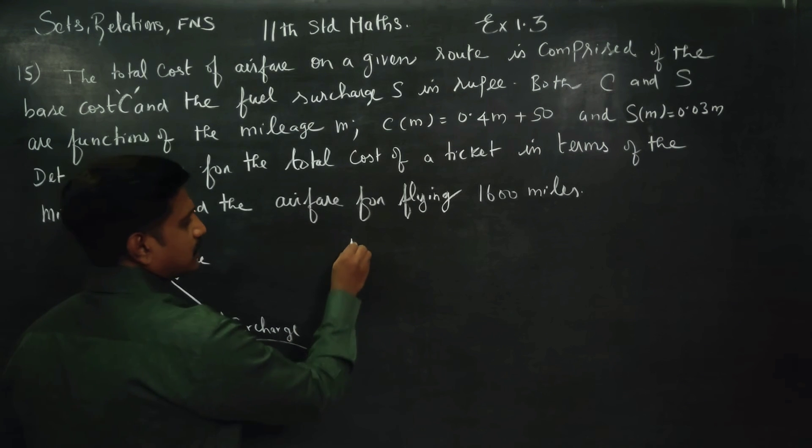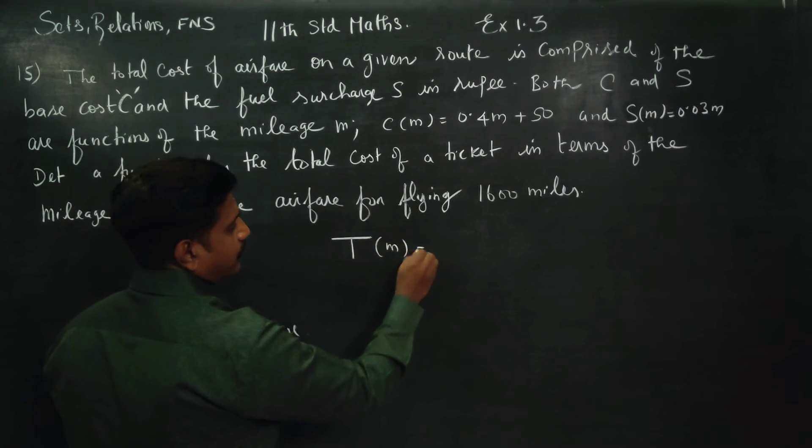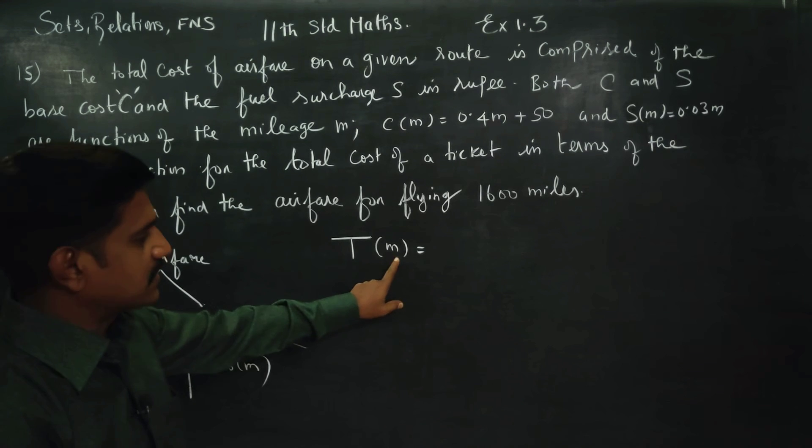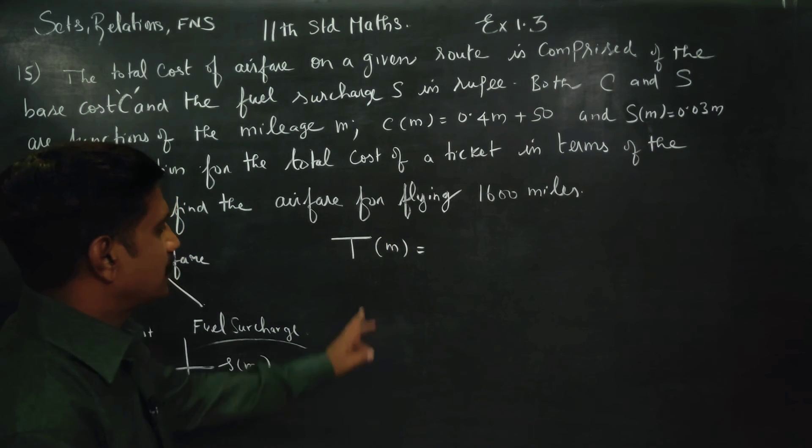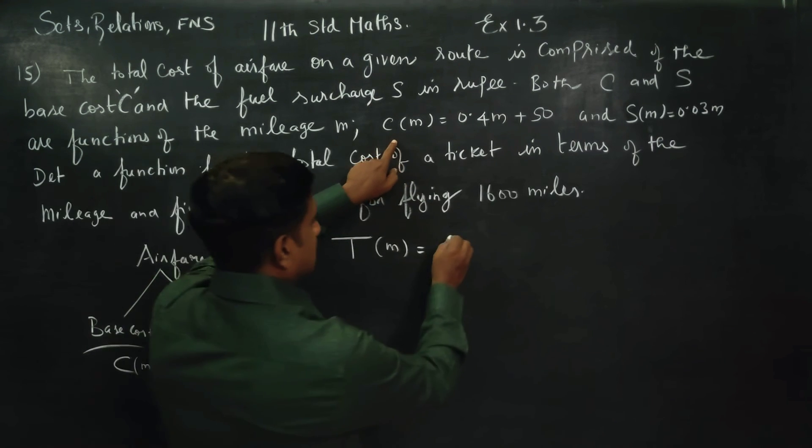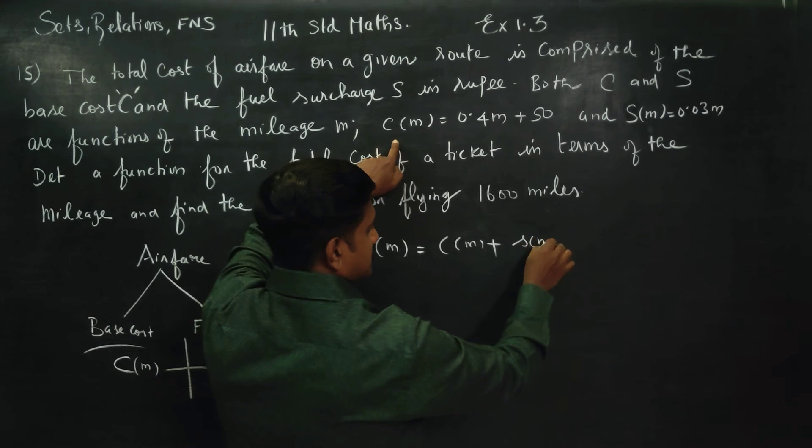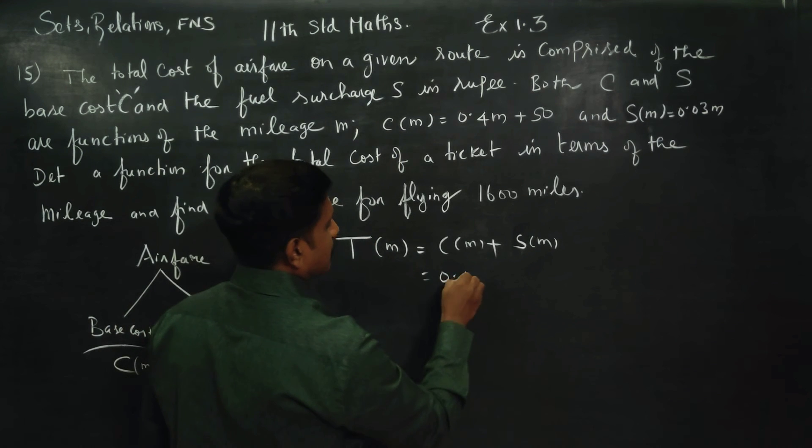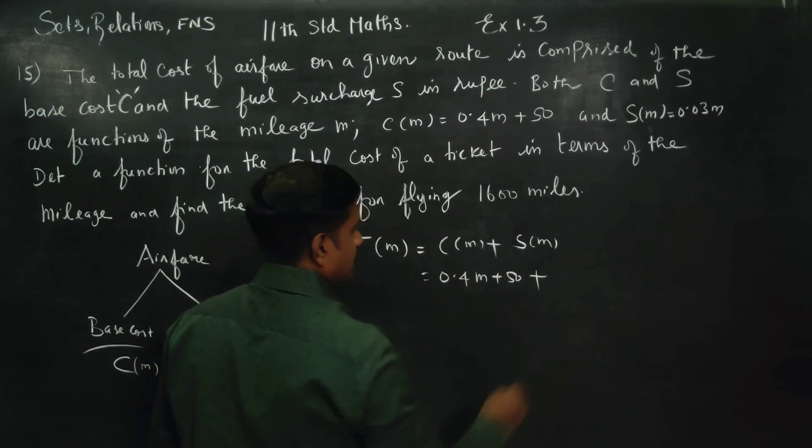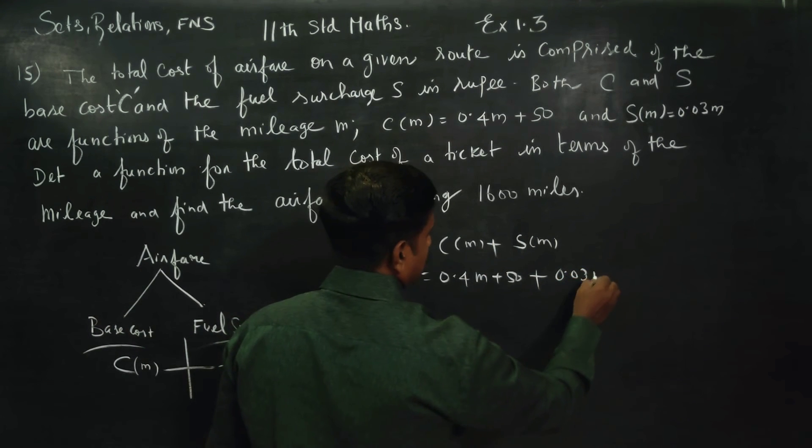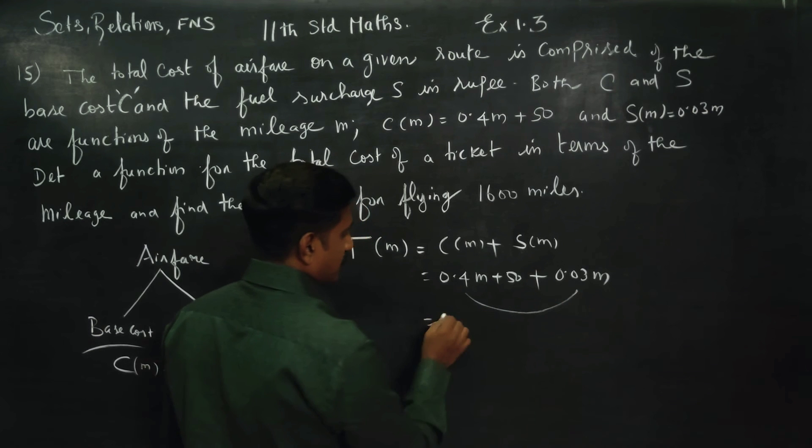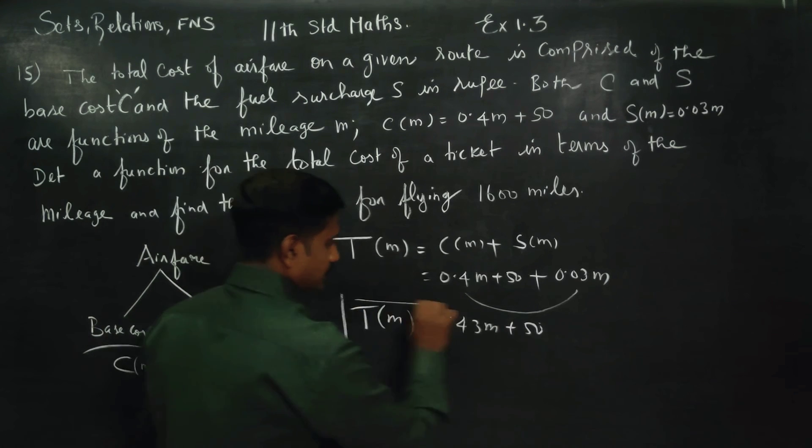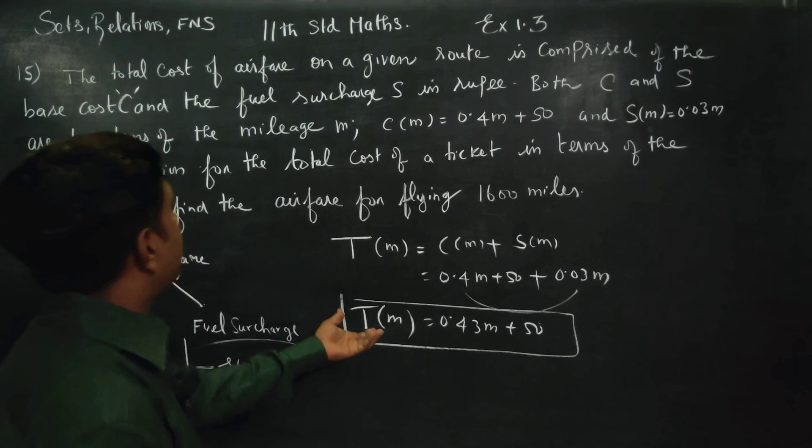I am going to find the total cost of the air ticket. The total ticket rate is a function of mileage. This includes two bifurcations: base cost C of M plus surcharge cost S of M. This gives us 0.43M plus 50. This is the function indicating the total cost of the flight ticket.